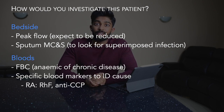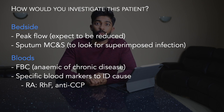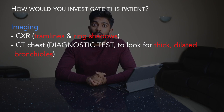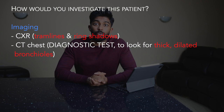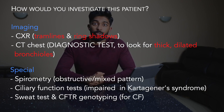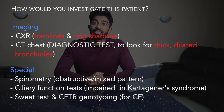Moving on to some blood tests, I'd like to start with a full blood count to look for signs of anaemia of chronic disease. I'd then do some blood tests to look for specific markers to help identify the cause of the bronchiectasis, such as rheumatoid factor and anti-CCP for rheumatoid arthritis. I'd then move on to imaging. I'd like to start with a basic chest x-ray, particularly looking for tram lines and ring shadows, which are two specific signs of bronchiectasis. The diagnostic test for bronchiectasis would be a CT chest, where I'd look for thick dilated bronchioles. I'd then finish with some special tests, such as spirometry where the most common finding would be an obstructive pattern or a mixed pattern.